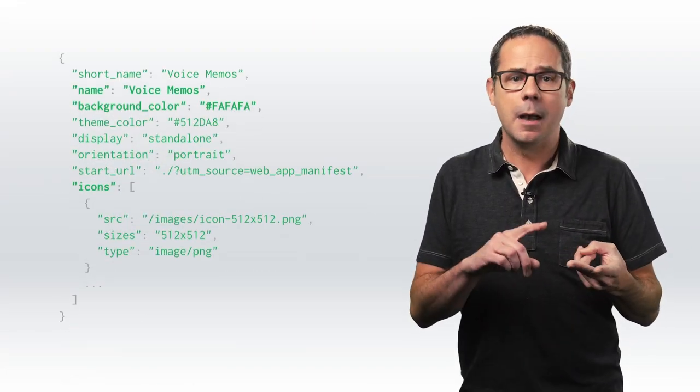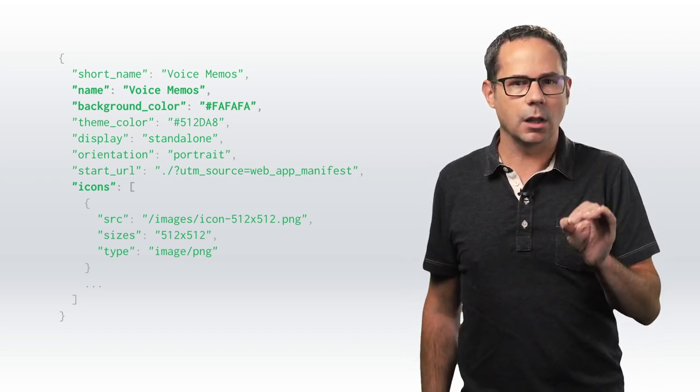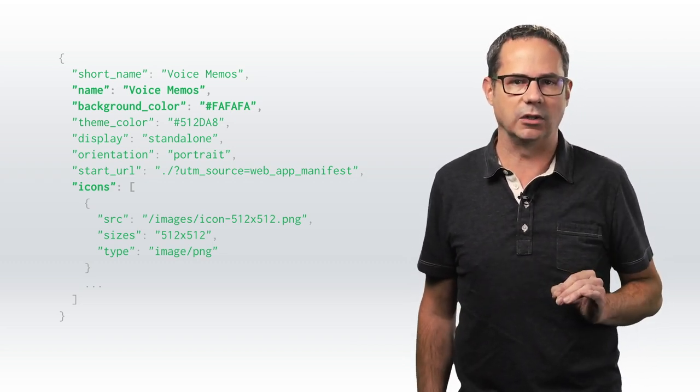In the past, users typically saw a white screen while waiting for your app to load. The splash screen is generated based on a combination of information from the web app manifest, including the app name, background color, and the icons. Chrome will use the icon that is closest to 128 device pixels. So on a 1x device, that's 128 by 128 pixels. Or on a 2x device, it's 256 by 256, and so forth.